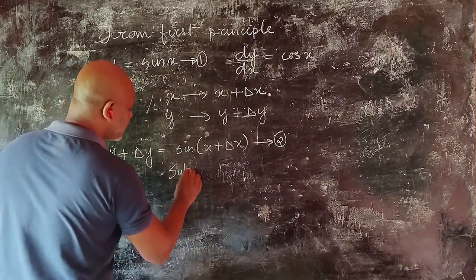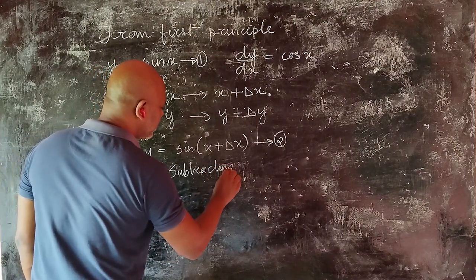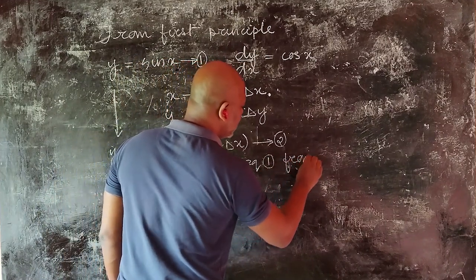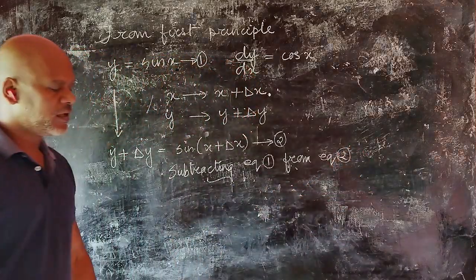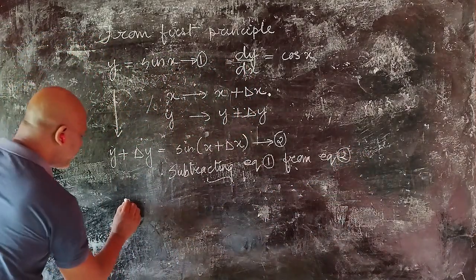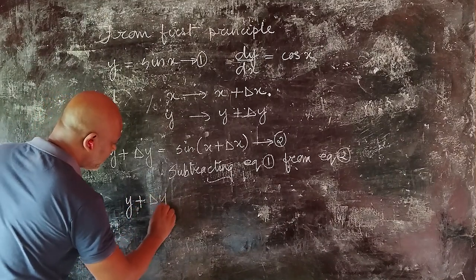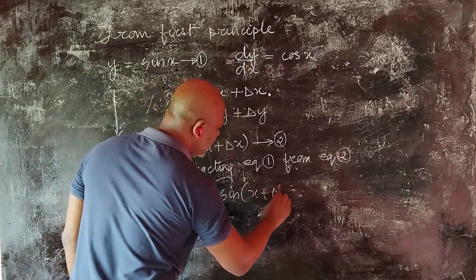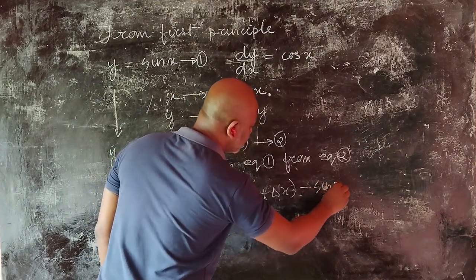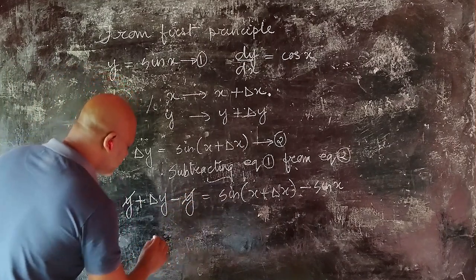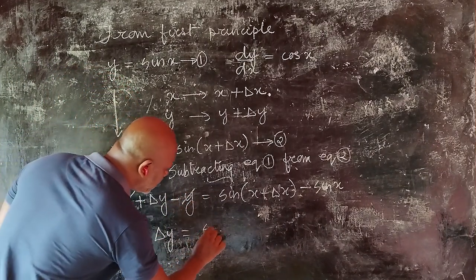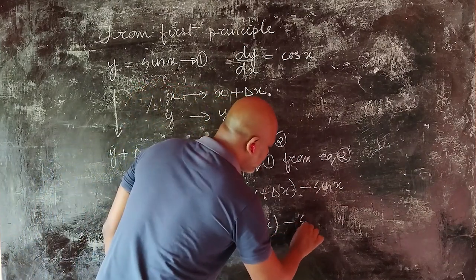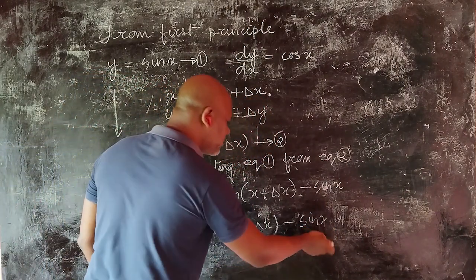Now what we can do is subtract equation 1 from equation 2. So subtracting equation 1 from equation 2, delta y is equal to sin of x plus delta x minus sin x.